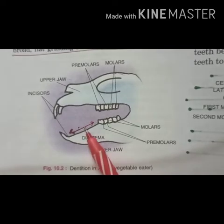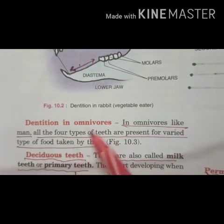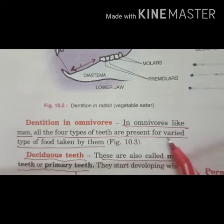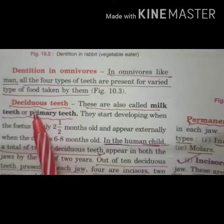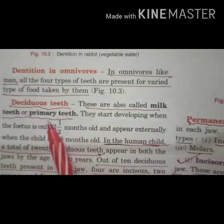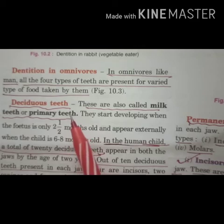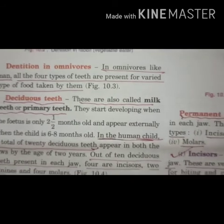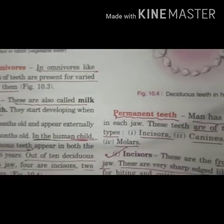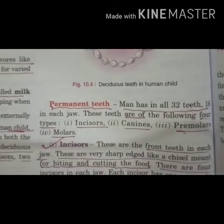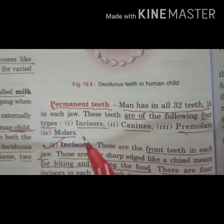In the rabbit, the space between the incisor and premolar is the diastema — canines are absent in herbivores. In omnivores like humans, all four types of teeth are present for different types of food. Deciduous or milk teeth are 20 in number; when they fall, the permanent teeth begin to appear. In humans there are 32 permanent teeth, with four main types in each jaw: incisors, canines, premolars, and molars.